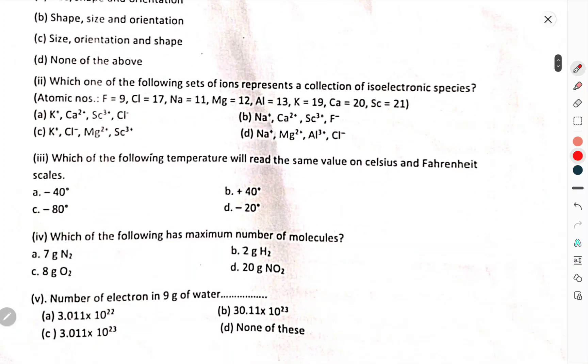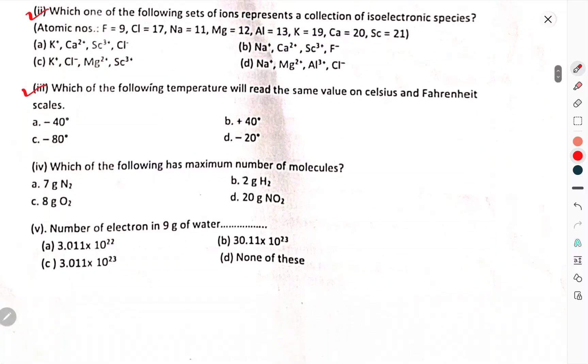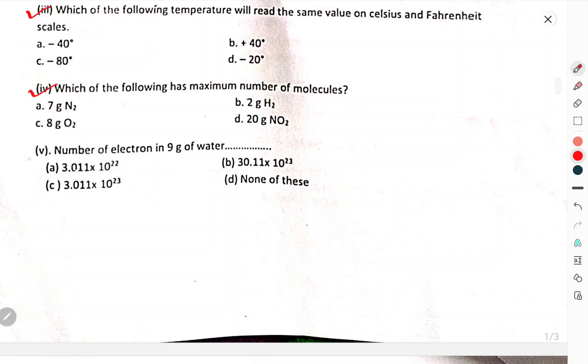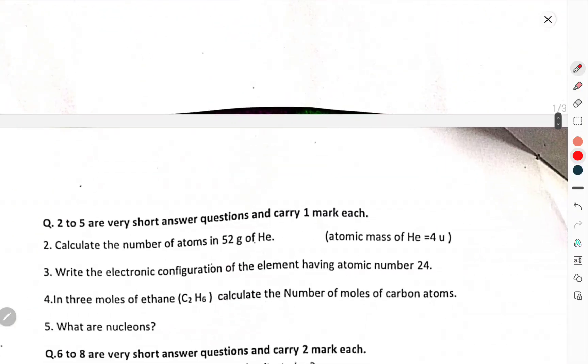Which one of the following sets of ions represents the collection of isoelectronic species? Which of the following temperature will read the same value on Celsius and Fahrenheit? Which of the following has maximum number of molecules? Number of electrons in 9 grams of water.